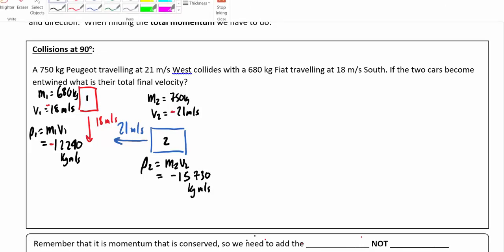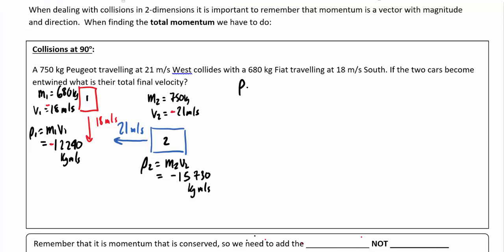Conservation of momentum says that our initial momentum just has to equal our final momentum. These are vectors. When we were in one dimension, it was simple enough to add or subtract them. In two dimensions, we simply have to do a vector addition. So it doesn't matter which order I go in — I'll start with momentum one going this way, P1 initial, then add momentum two in this direction, P2 initial, and those two add up to my total.